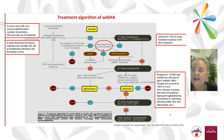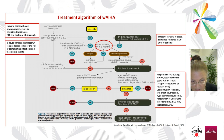For second line, the choice is between splenectomy and rituximab. Rituximab has a very good response — 78% of cases — but is less effective when there is complement involvement. Concerns include infusion reactions, neutropenia, hypogammaglobulinemia, reactivation of underlying infections, and in the COVID era, a lower response to vaccination.